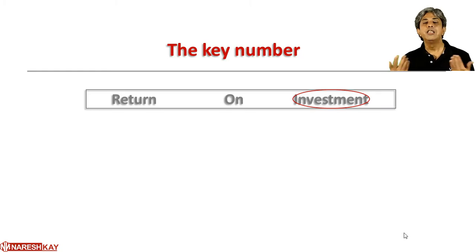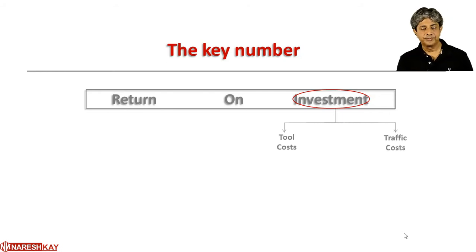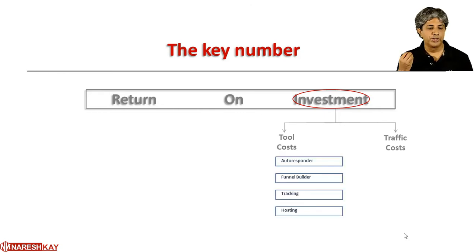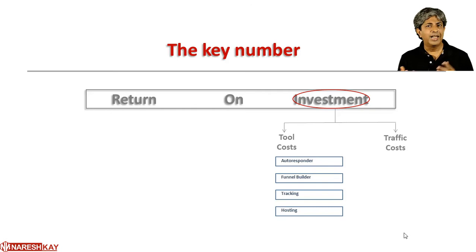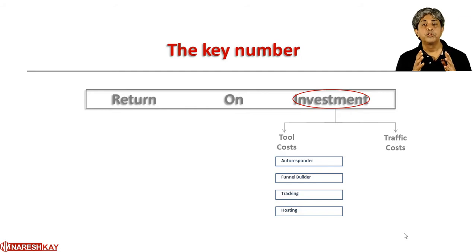On the investment side, it's all about the different costs you're incurring in the business. There are broadly two important heads. The first is traffic costs — the amount of money you spend to send traffic to the particular offer you're promoting. The second is tool costs, which include things like your autoresponders, funnel builders, tracking tools, hosting, and for more advanced marketers, webinar platforms and so on. These are the critical tools at any stage of your affiliate marketing journey.